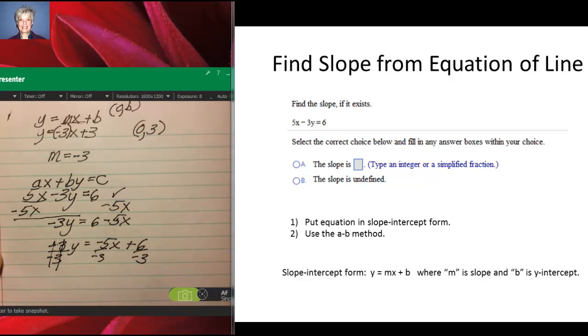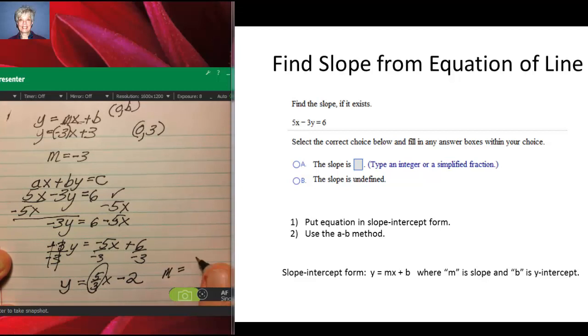These negative 3s will cancel, leaving me with y. Negative 5 over negative 3 is positive 5/3, so 5/3 x. Positive 6 over negative 3 is -2. So our slope of this line is positive 5/3. M equals 5/3.